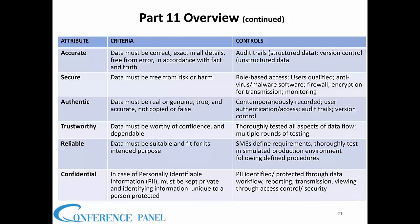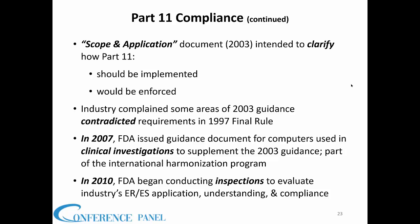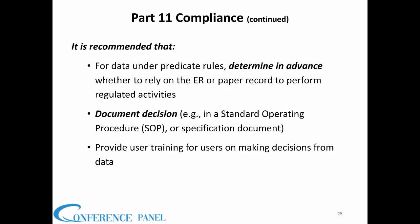The guidance for electronic records and signatures was issued in 1997. In 2003, the FDA came out with the scope and application guidance. The challenge was that they knew what to do but not how far they should go. That flexibility of interpretation led companies to back off for quite some time. You need to determine in advance whether you are going to rely on an electronic record or paper record to make decisions or perform regulated activities.